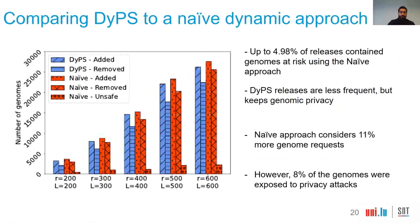This slide compares our approach to a naive dynamic approach that does not consider that genome releases can be combined. Using the naive approach, up to 5% of releases could contain genomes at risk, and up to 8% of genomes could be exposed to privacy attacks. Using DIPs, we release less frequently, but we fully protect genomic privacy.